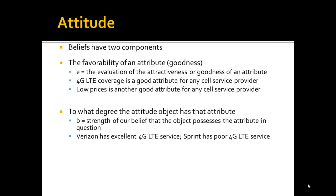The other component is the degree to which a specific attitude object has that attribute or property. In other words, this is our belief that Verizon has or does not have 4G LTE coverage. In this case, we would have a strong, positive belief that Verizon has very good 4G LTE service. For Sprint, our belief would be that it does not have much 4G LTE service — but it does possess low prices, which is a good attribute, whereas Verizon does not possess good prices and does poorly on that attribute.